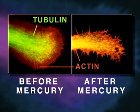Shown here is a neurite growth cone stained specifically for tubulin and actin, before and after mercury exposure. Note that the mercury has caused disintegration of tubulin microtubule structure.